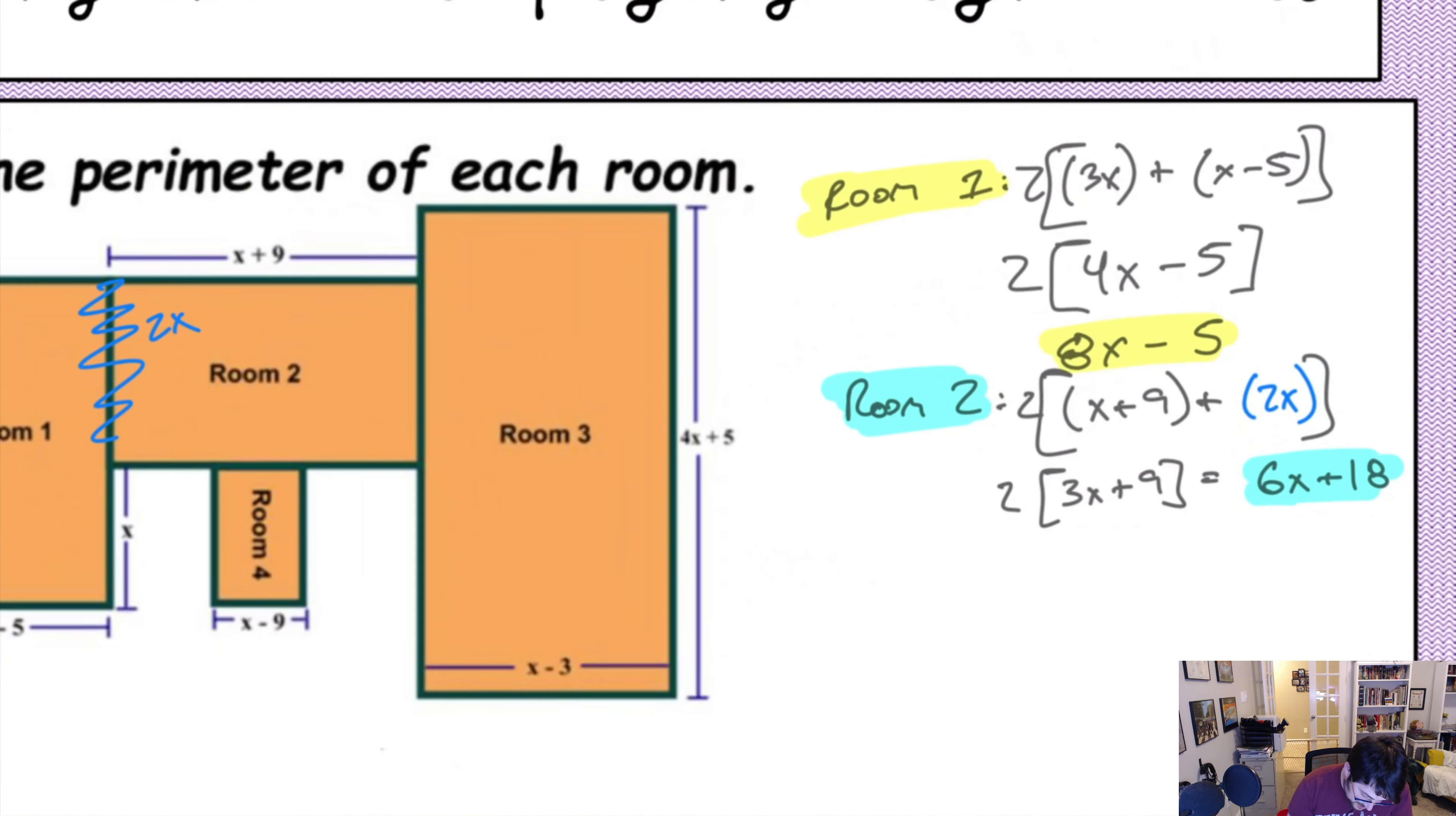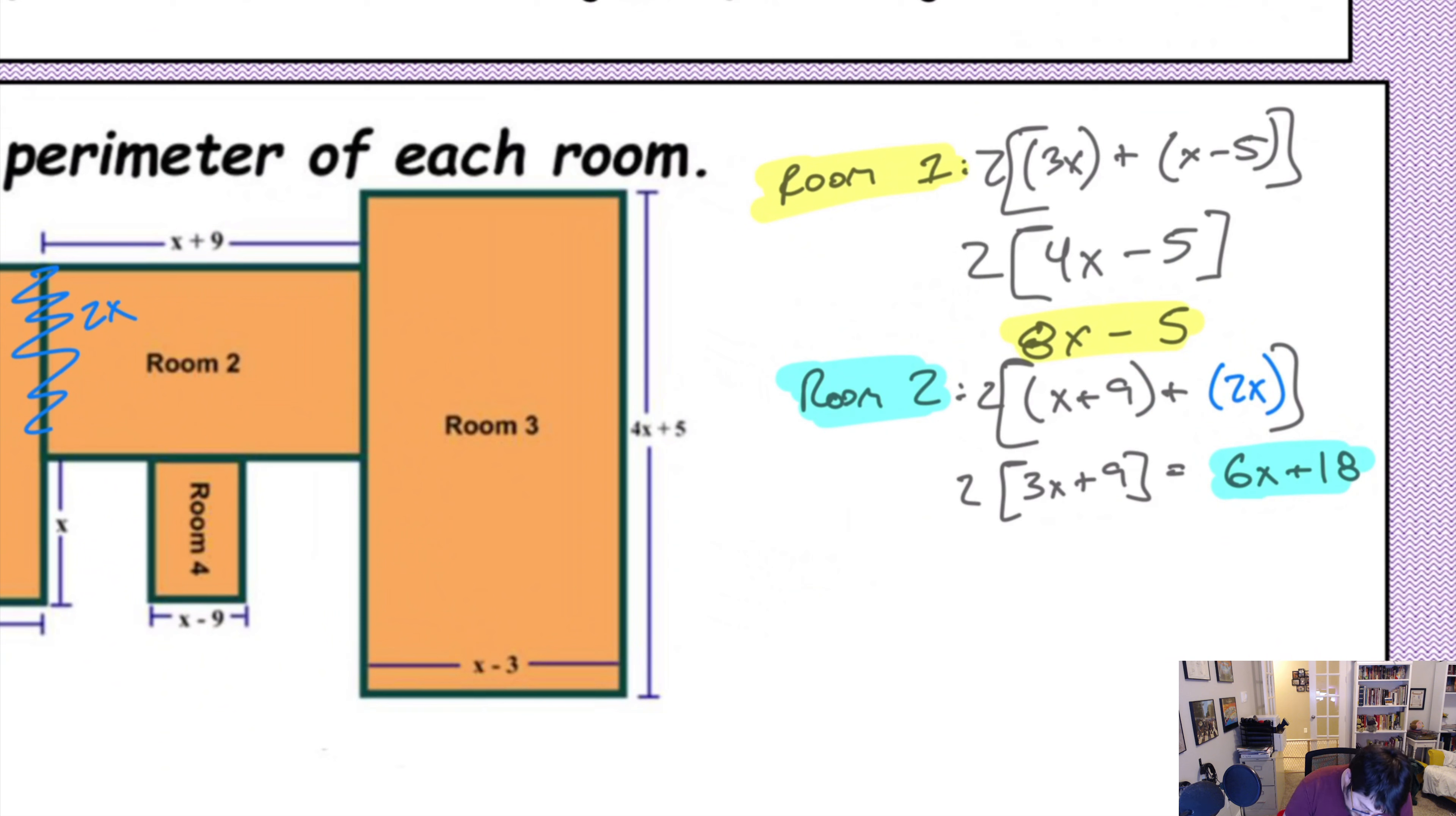Now, let's talk room 3. We know this is 4x plus 5 and then x minus 3. This gives us 5x plus 2 times 2, which gives us 10x plus 4. That is our room 3.